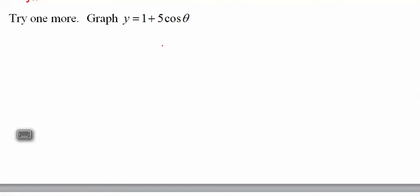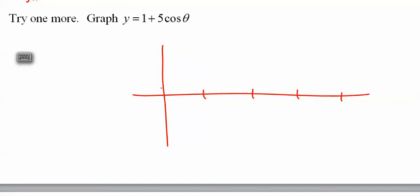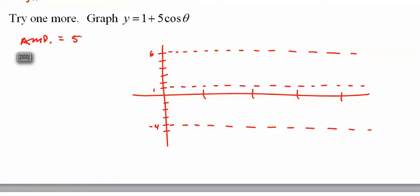Amplitude is five. Period is 2π. Vertical shift is one.